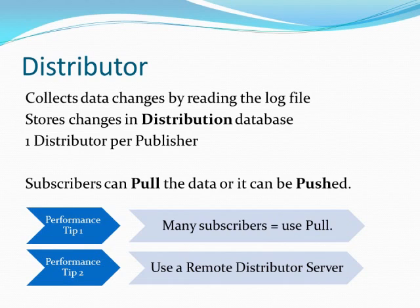On your subscriber side, you can actually pull the data or it can be pushed out to you. What Microsoft recommends is that if you have many subscribers, you need a pull model — you're basically offloading all the work from your distributor onto your subscribers. In my environment, I have 60 subscribers, so I'm not going to have all that work being done by pushing it out because it's just way too much work. You offload the work further down the chain, so your subscribers are doing the work when you do a pull model.